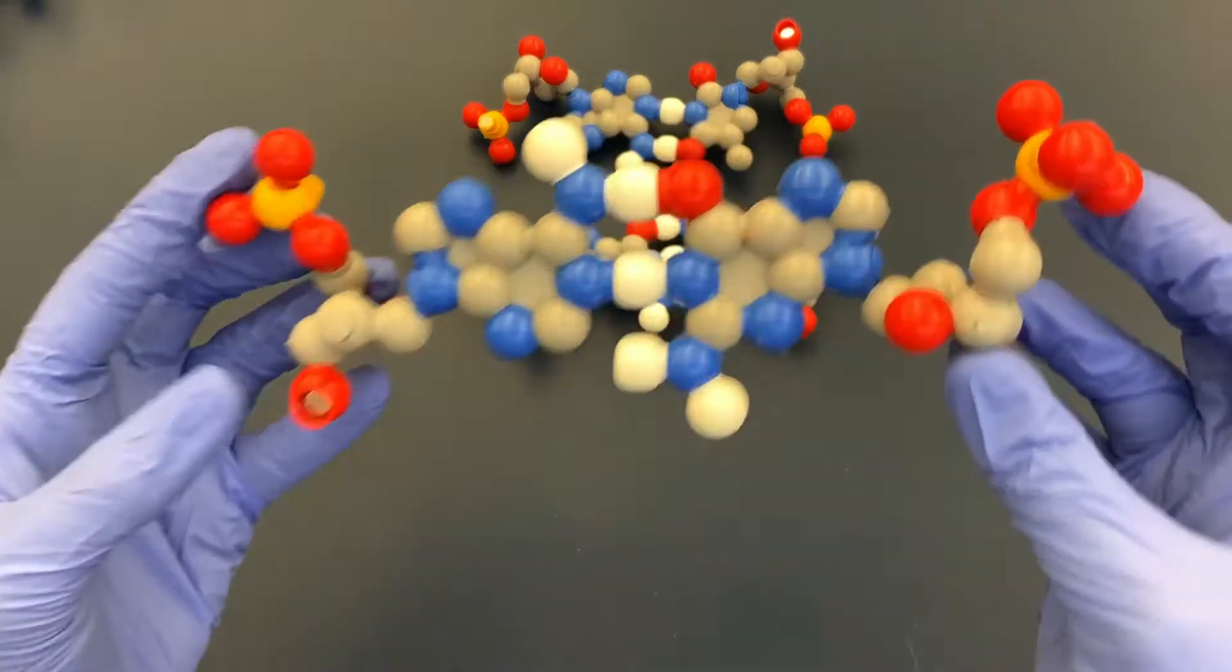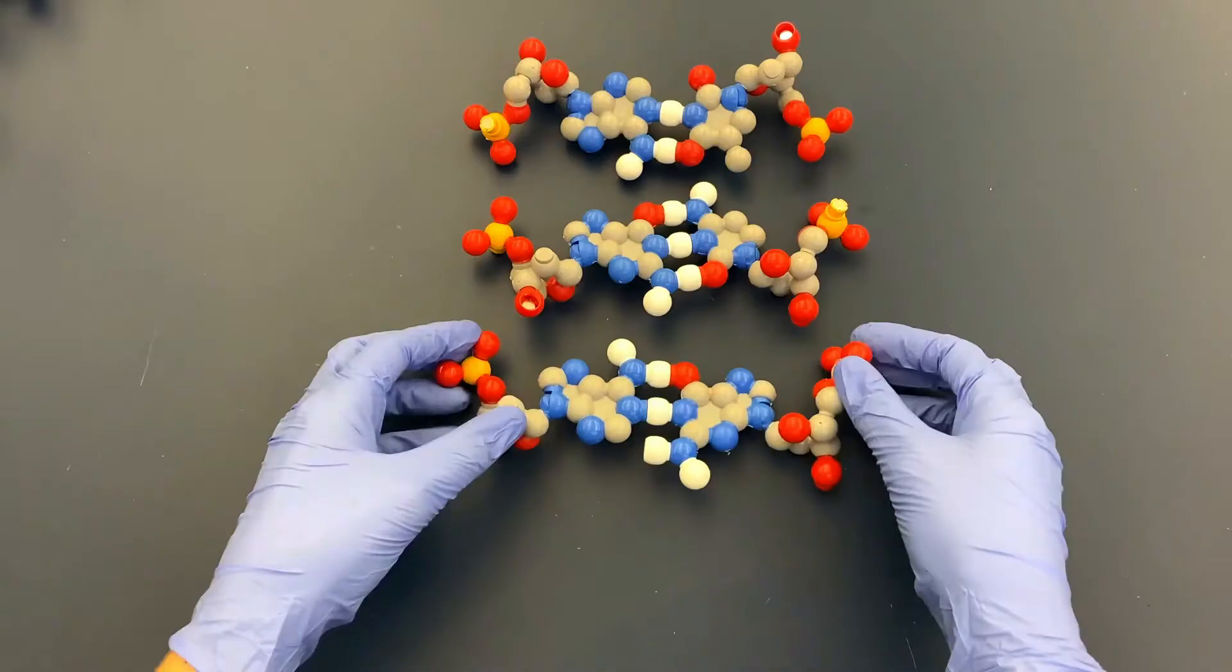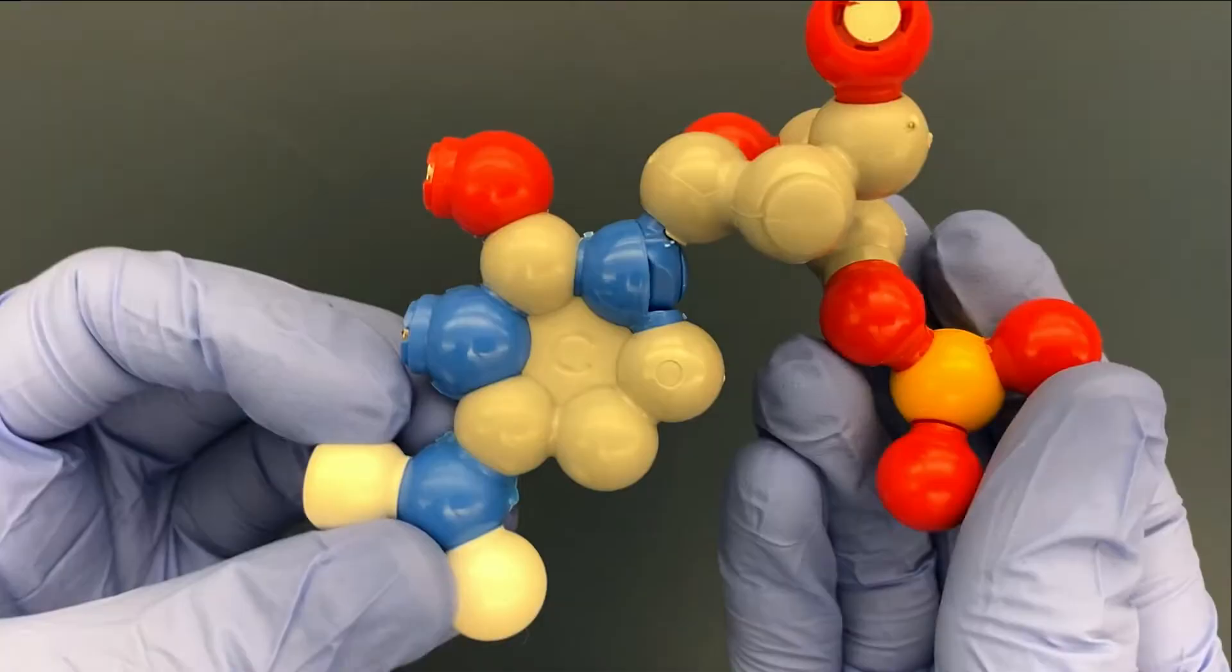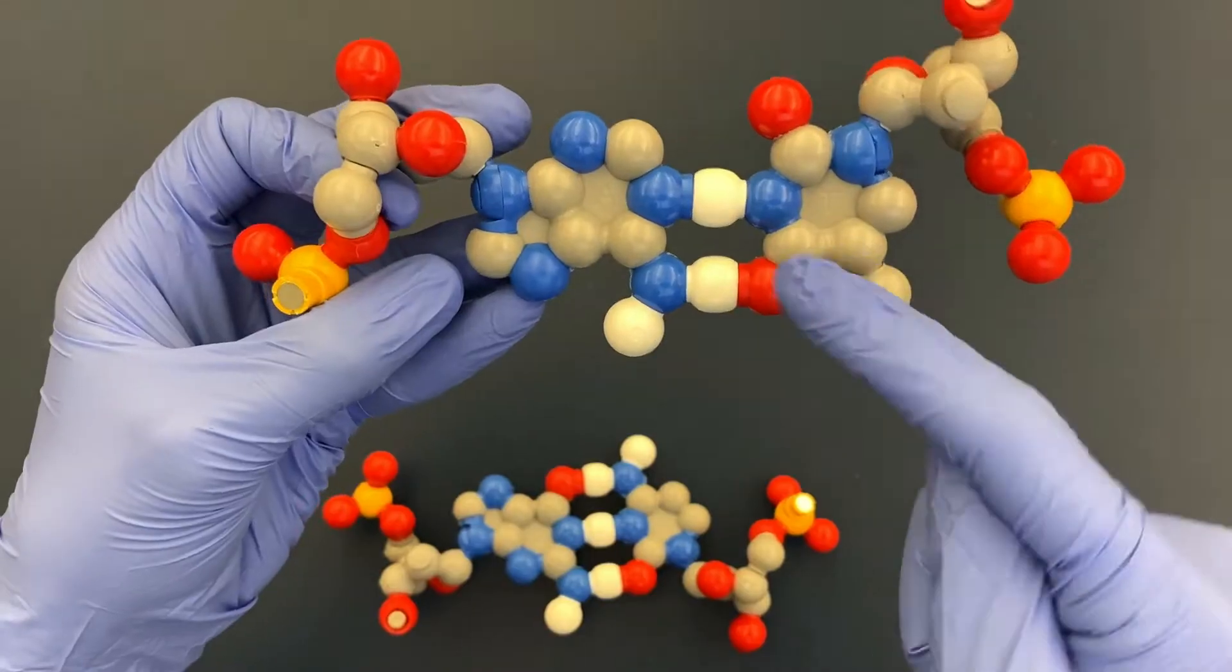So why can't you pair A with G? Because A and G both have two carbon rings, and if you pair them together, it's going to make the double helix way too big. So why can't you pair A with C? Well, C and G are able to make up to three hydrogen bonds. A and T are only able to make up to two hydrogen bonds.